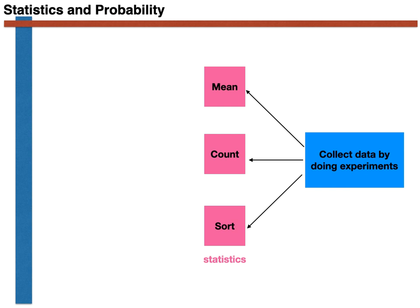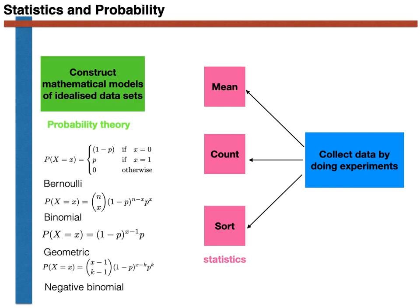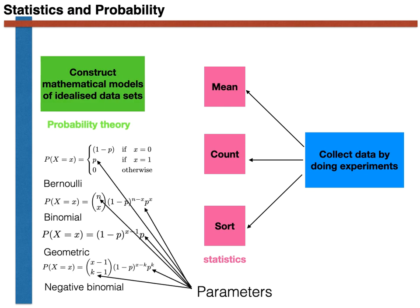We then discussed the probability theory that we had introduced in subsequent weeks and the various types of random variable that we have studied. We talked about how all these random variables have probability mass functions, and how these probability mass functions are functions of one or two parameters.